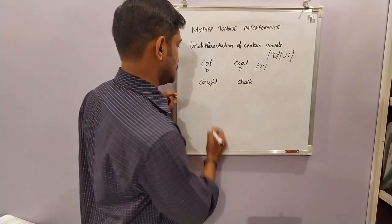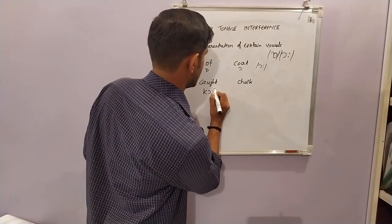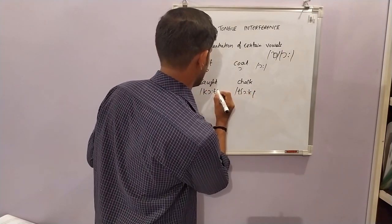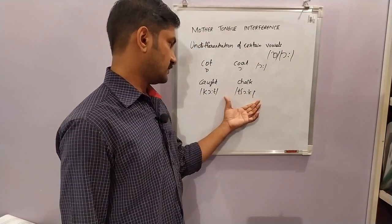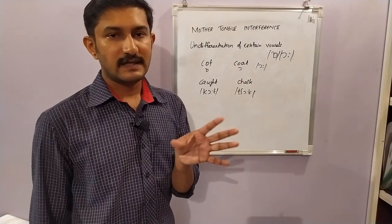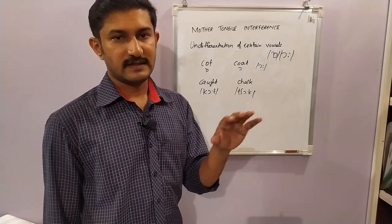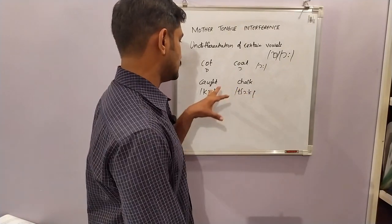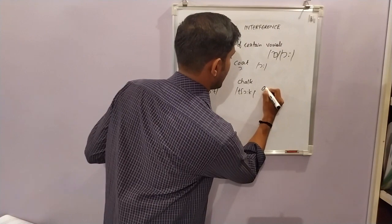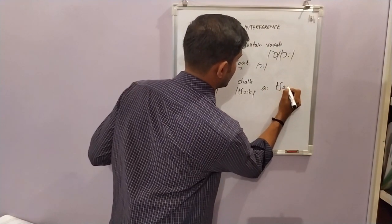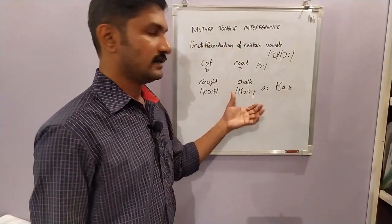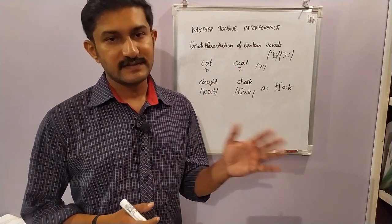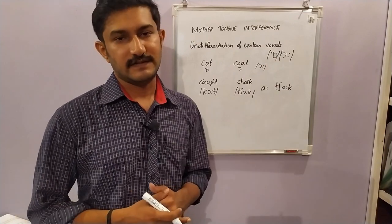Here it is 'caught' and 'chalk'. So caught and chalk. At least some of the Indian learners of English — it may differ from region to region. In South India, we have a tendency to use the 'ah' sound: chalk and caught. So this is undifferentiation of certain vowels — Indian learners fail to recognize the difference between certain vowel sounds.